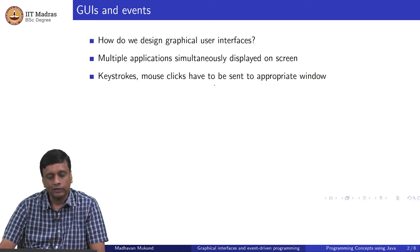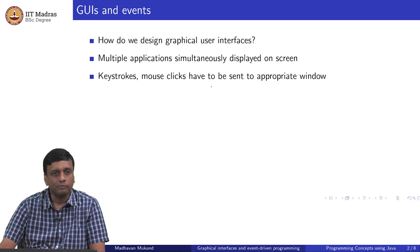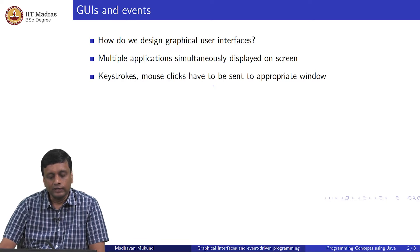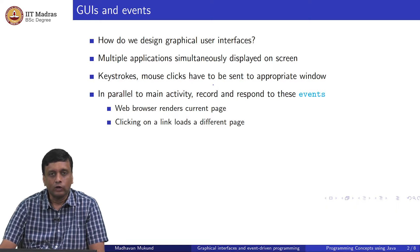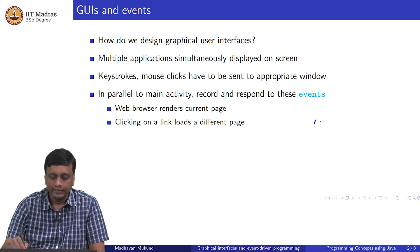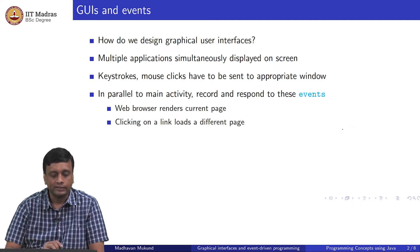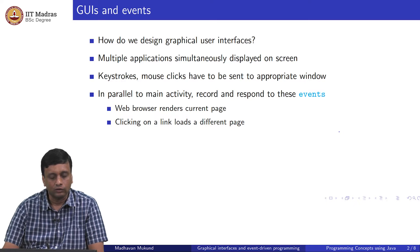When I type something, click the mouse, or write on the screen with my pen, first it has to be understood which part of the graphical interface I am interacting with. That is the first thing — to map what I am doing on the screen with what is actually running in the background. For example, if I write something, which part of the screen should display that writing, or if I click on a button, which button have I clicked on.